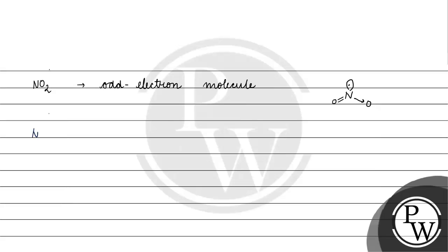Next is NO2-. Using the hybridization formula — half of the valence electrons of nitrogen, which is 5, plus 1 for the negative charge — this gives us 3, so the hybridization is SP2. Therefore, the bond angle will be somewhere around 120 degrees.